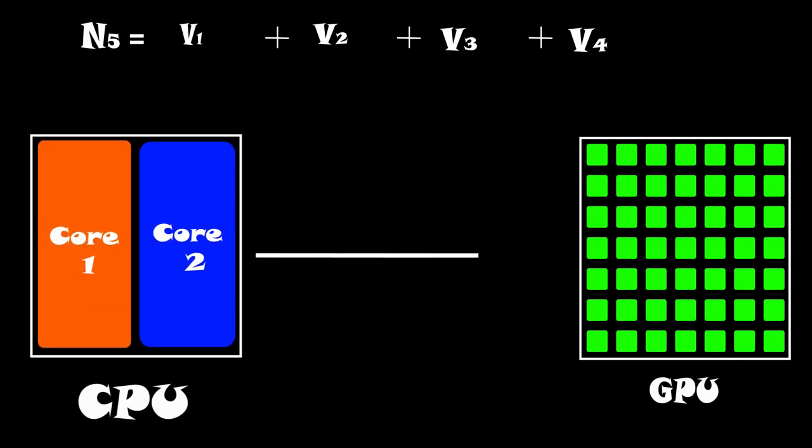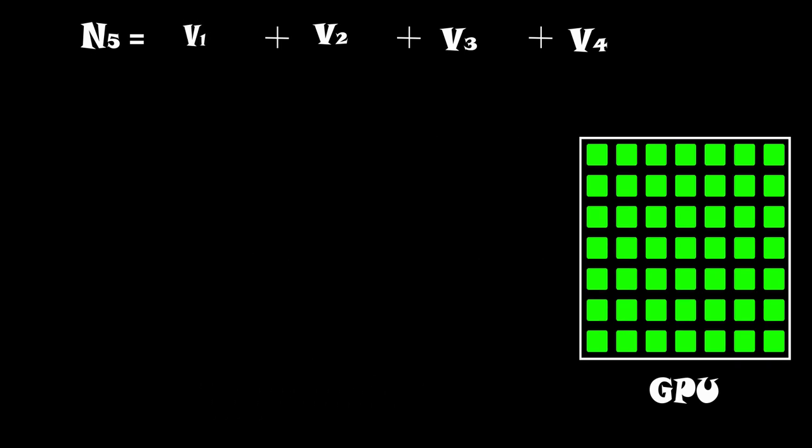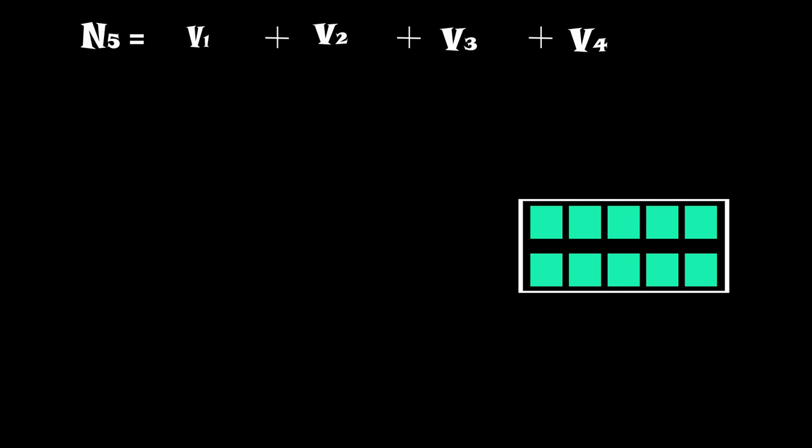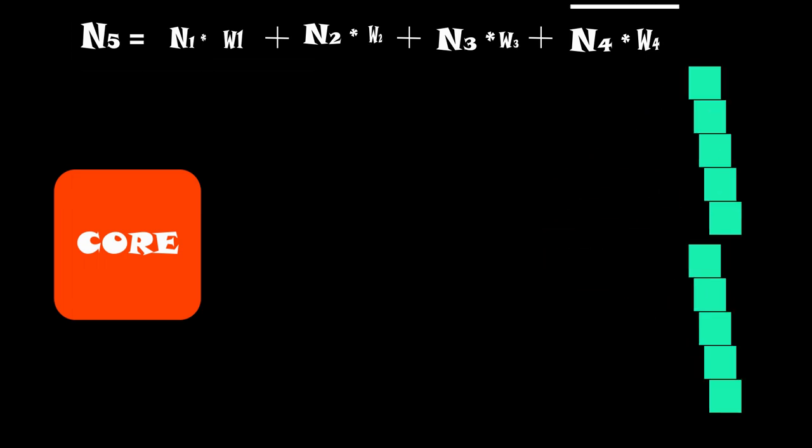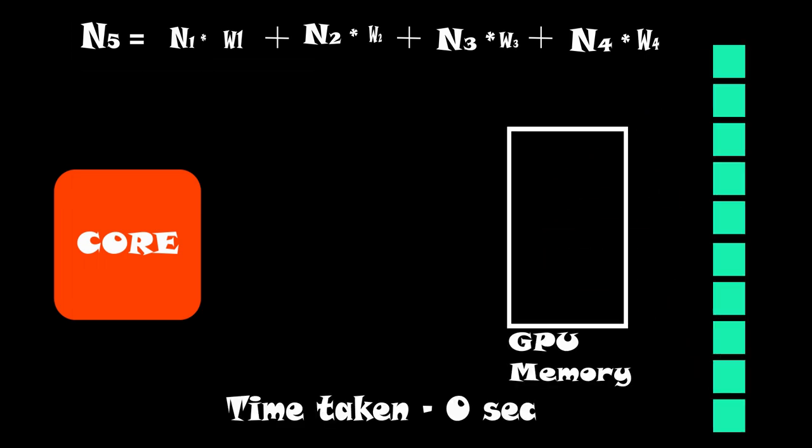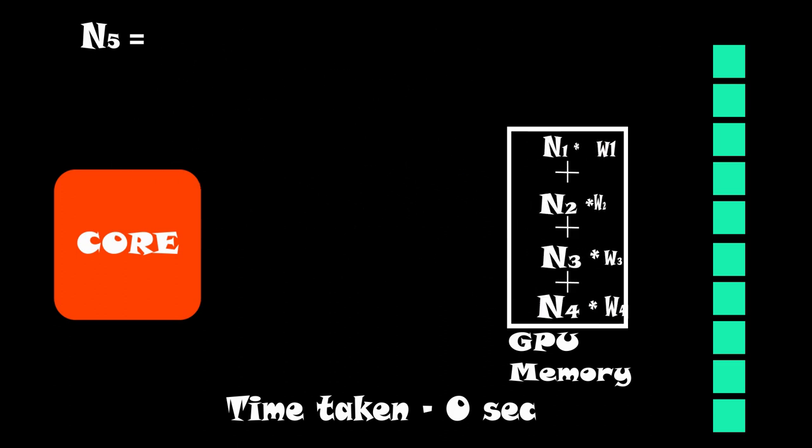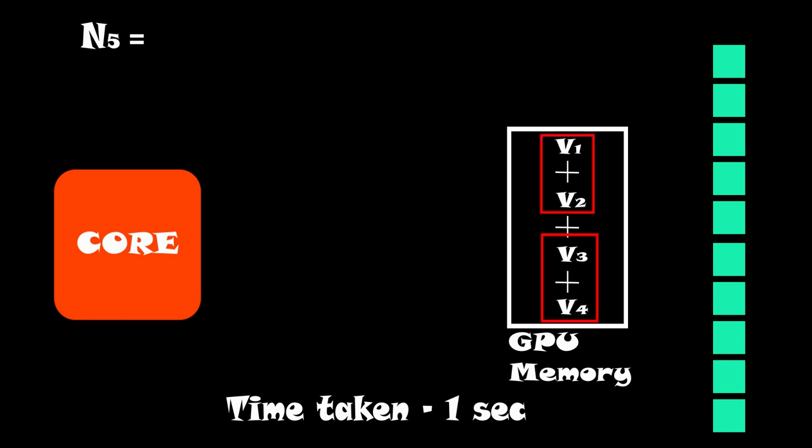Now we use CPU to assign tasks to GPU. For example suppose if we have a GPU with 10 cores and a single core CPU and we have to perform these given operations. Remember that each core still requires one second to complete a single operation. Now CPU will assign each task one by one to idle cores of GPU. Hence GPU quickly completes its job.